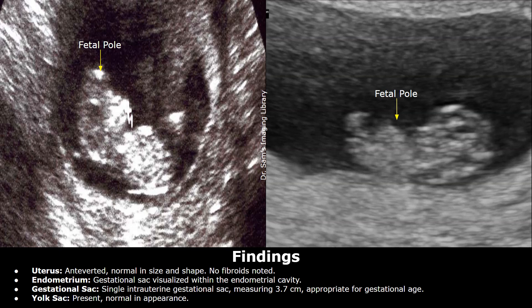Uterus: anteverted, normal in size and shape, no fibroids noted. The uterus is anteverted in most cases, so you can write this statement.